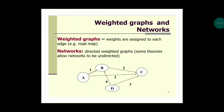In weighted graphs and networks, weights are assigned to each edge. Networks are directed weighted graphs, though some theories allow networks to be undirected. An edge is composed of two pairs of vertices. For example: edge a-b has weight 1, edge a-c has weight 2, edge b-d and c has weight 2, edge d-b has weight 4, and edge d-c has weight 3.